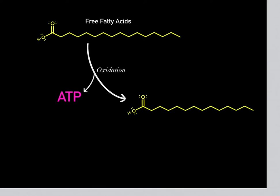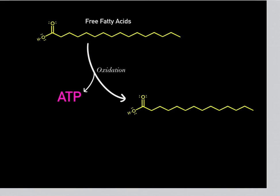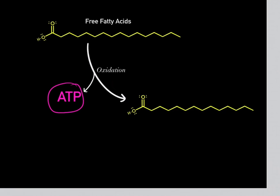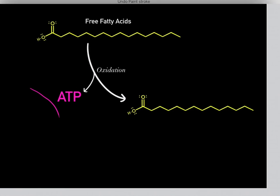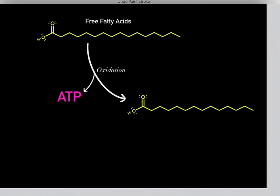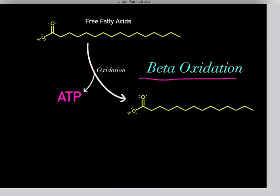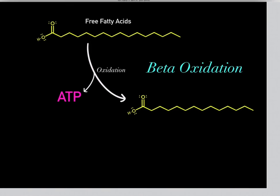Our cells can take fat and free fatty acids and oxidize them to produce ATP to fuel all the energetic processes we need for life. This process is referred to as beta-oxidation. But how exactly do our cells go through beta-oxidation?